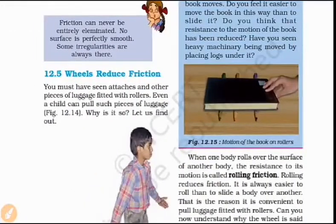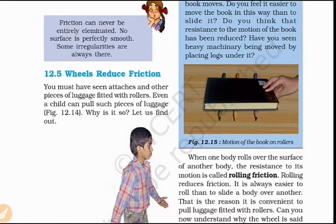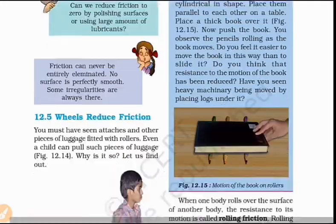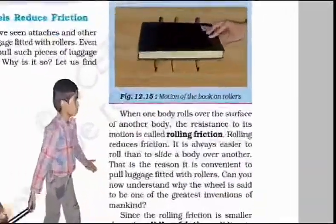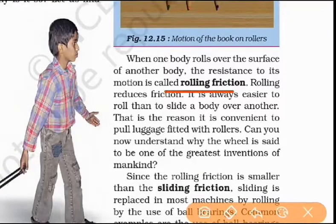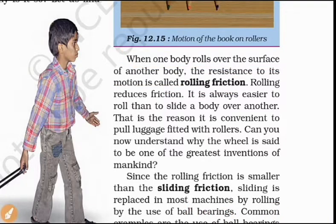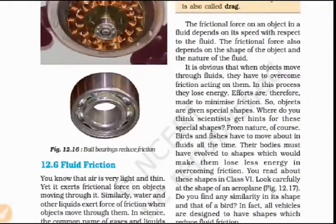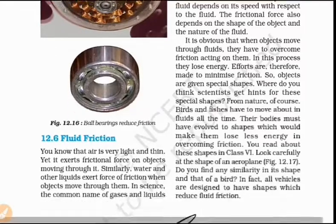We reduce the friction of wheels using lubricants. When we start with static friction, moving the object requires extra force. Sliding friction is slightly less. A wheel has a smaller point of contact with the road, reducing friction. Rolling friction is smaller than sliding friction — when a body rolls over the surface of another body. Bearings use rolling friction, which is smaller than sliding friction.